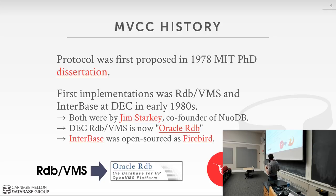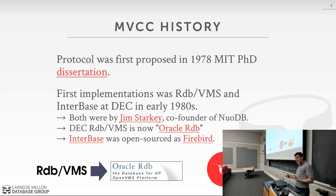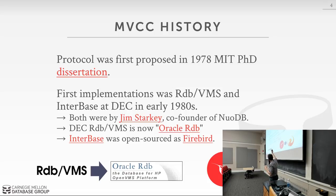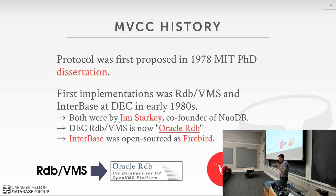DEC RDB was sold to Oracle and is now called Oracle RDB — distinct from both the Oracle database and Oracle relational database. Interbase was sold off by DEC, went through a couple of holding companies, eventually became open source in the late 1990s, and the open source version is now called Firebird. Interbase still exists as a mobile embedded database, reportedly still using code from the 1980s. Firebird is one of the earliest open source database systems.